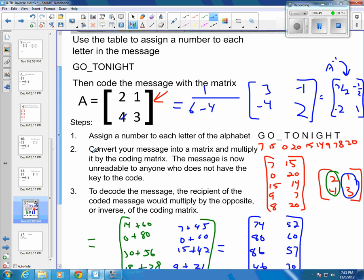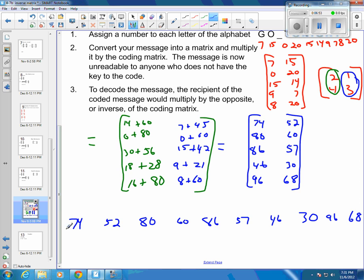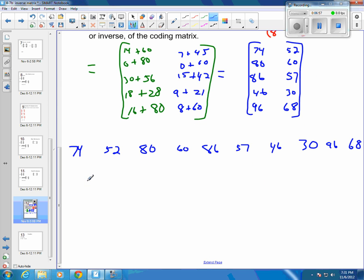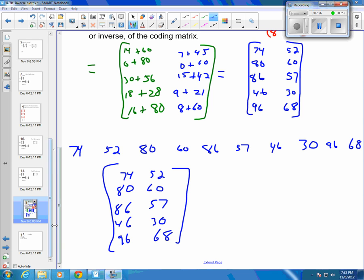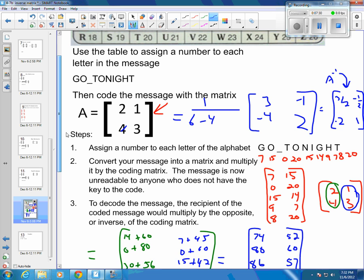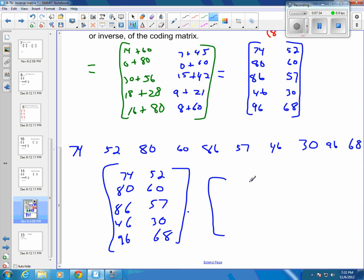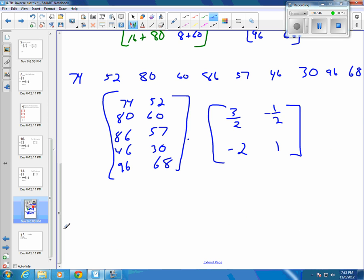So now I can take this matrix here and I can multiply it by my end if I am the person receiving this. So they would have the 74, the 52, putting it back together in a matrix. So they would get this set of codes and they would put it back as a something by 2 matrix. 60, 86, 57, 46, 30, 96, and 68. And then you would want to multiply it by the inverse. So our inverse again was this 3 halves, negative 1 half, negative 2, 1. So that was a 3 halves, a negative 1 half, a negative 2, and a positive 1.